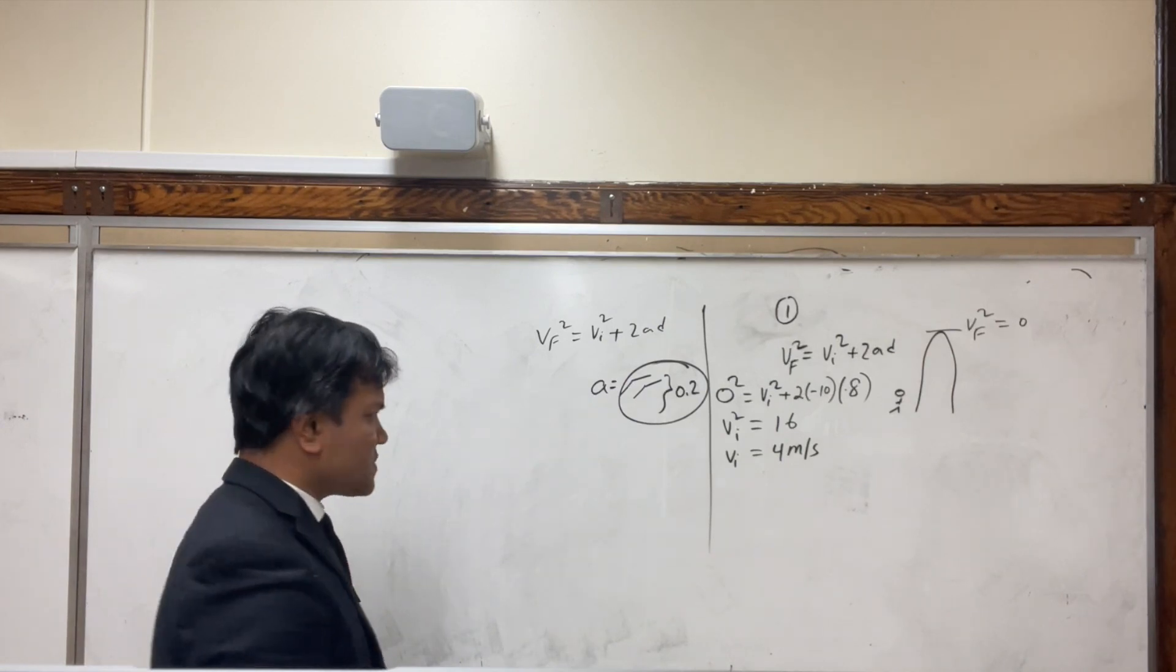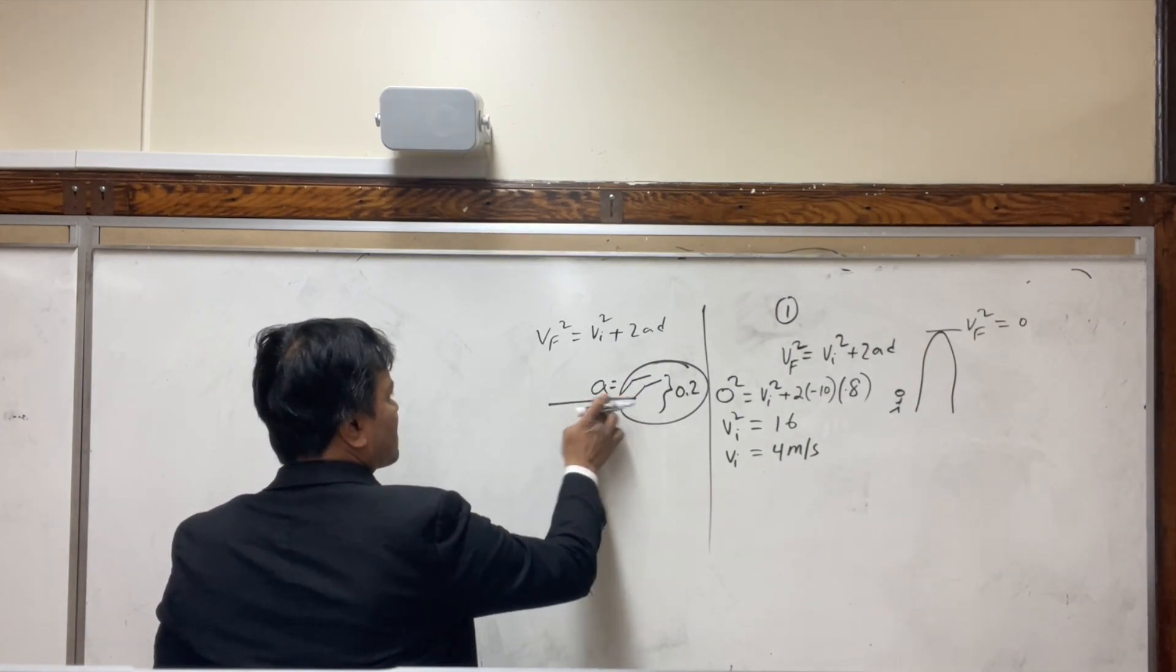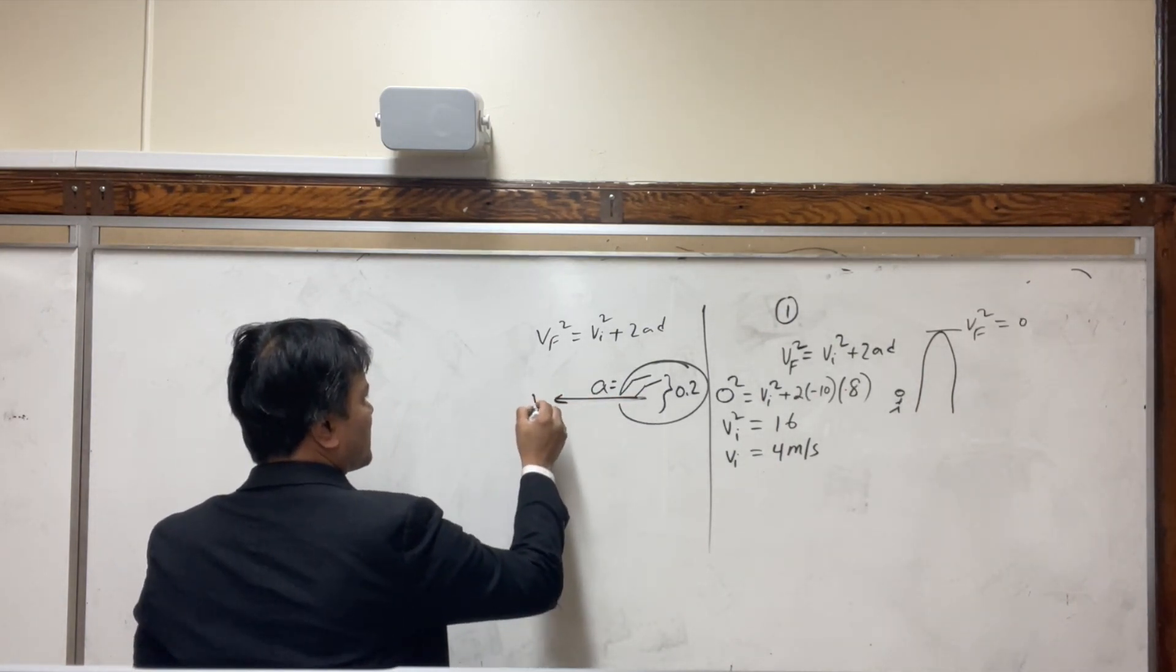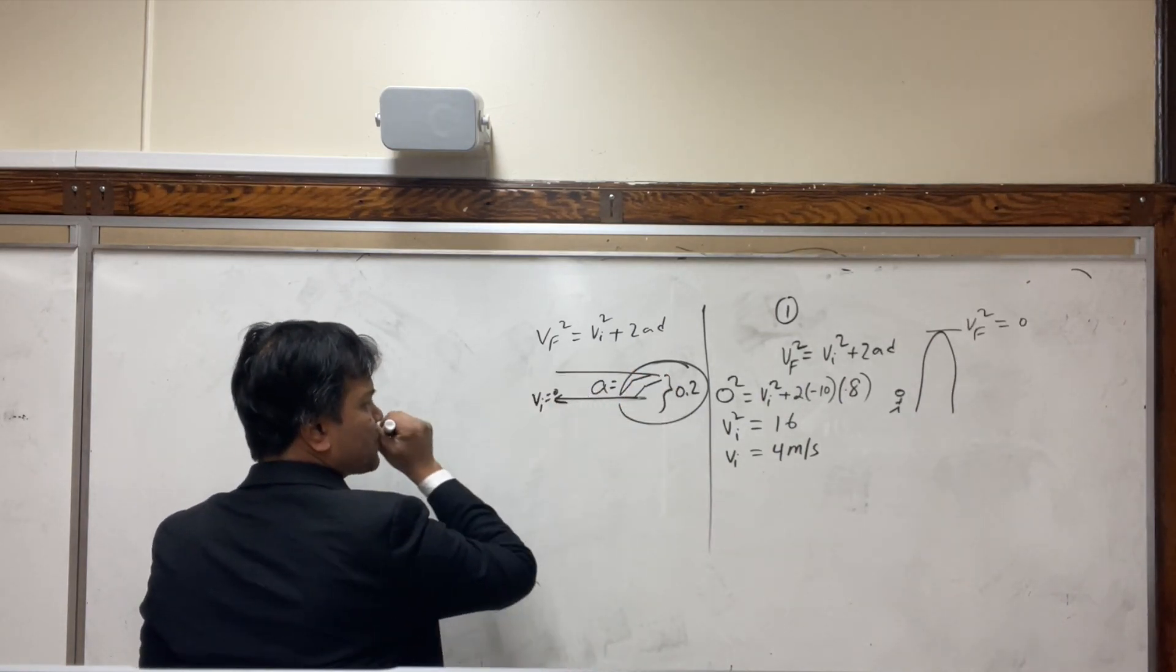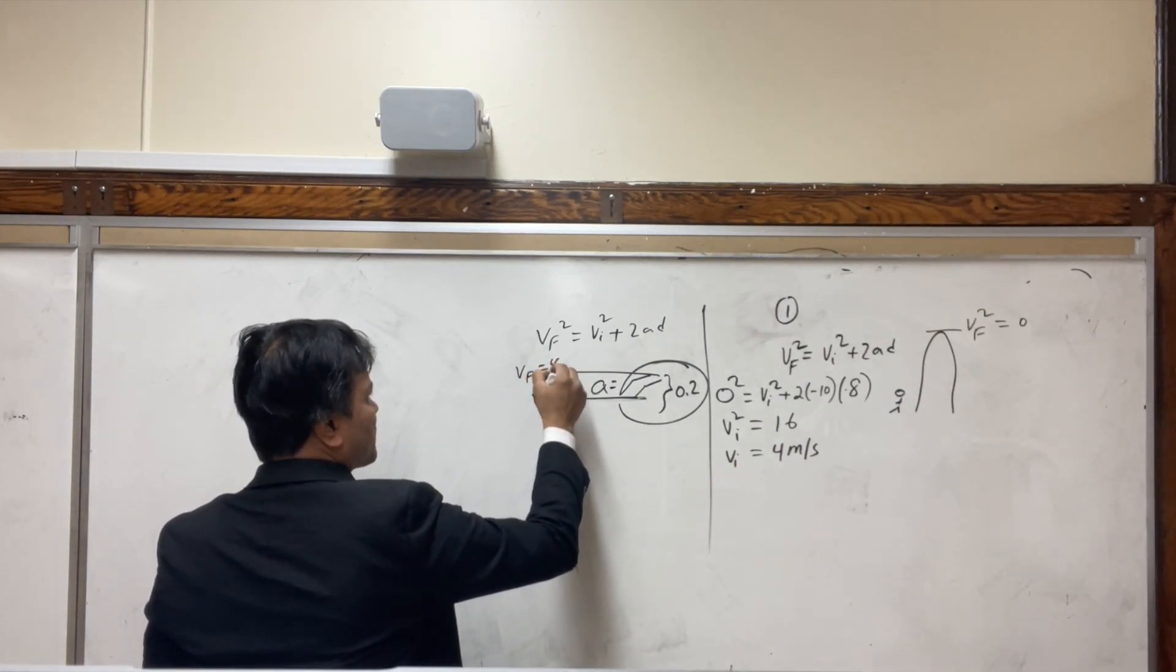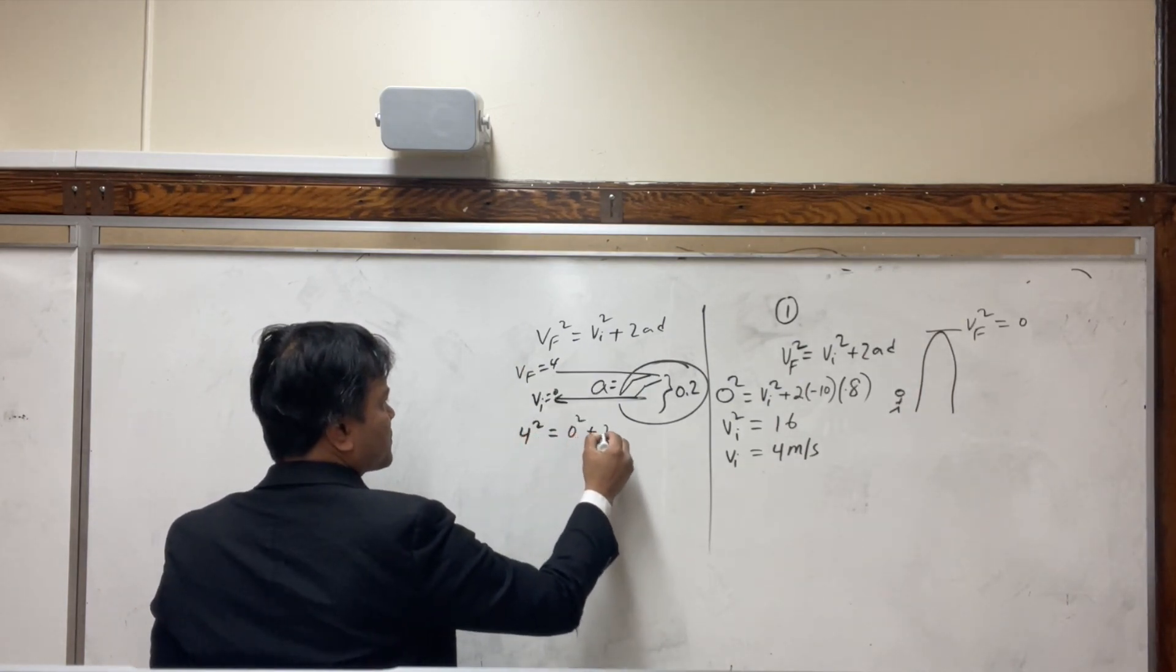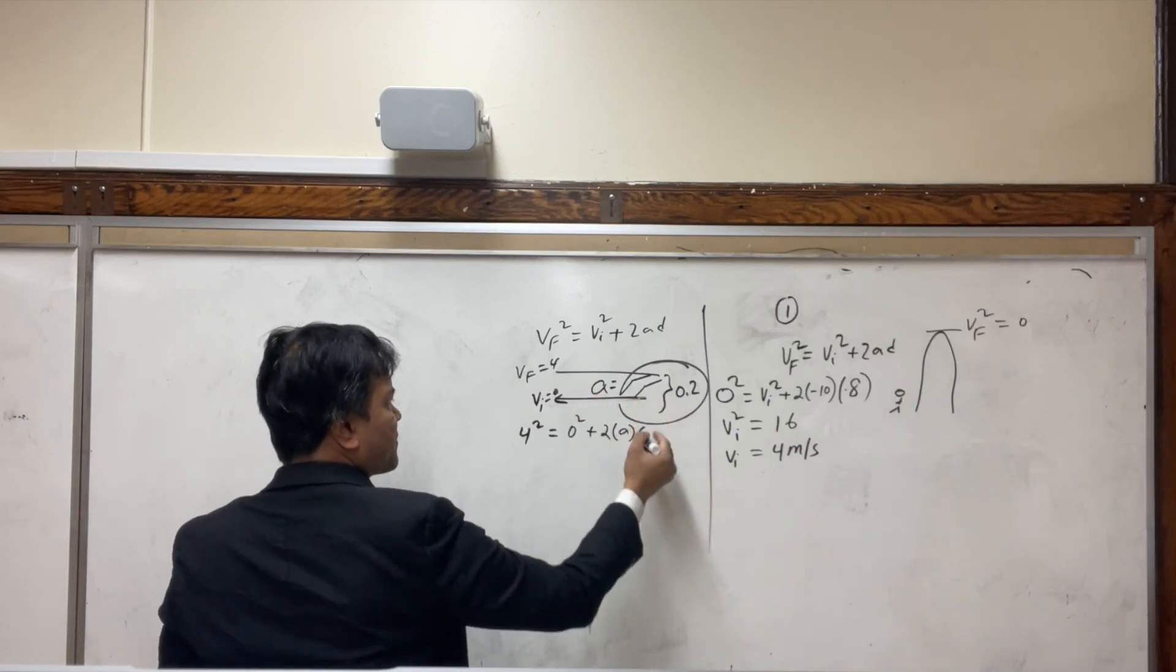How much I accelerate for that long distance, let's find it out. Over here my initial velocity is of course 0. My final velocity is of course what we found, this becomes the final velocity: 4. So 4 squared is equal to 0 squared plus 2a times D, because I accelerate for 0.2.